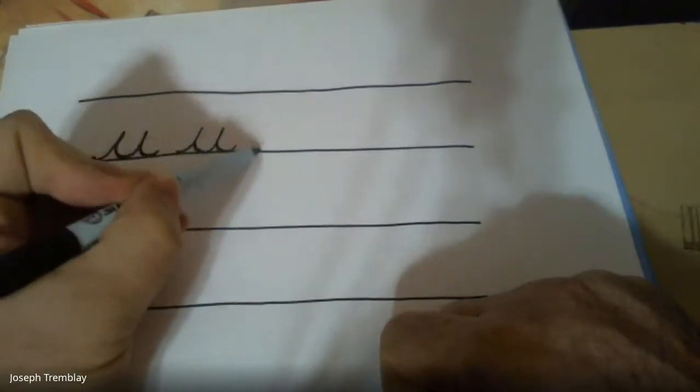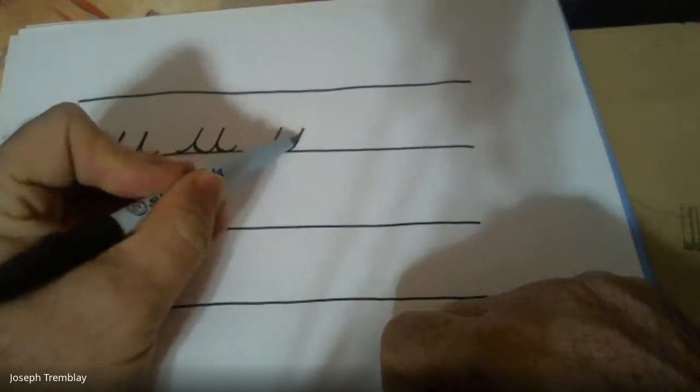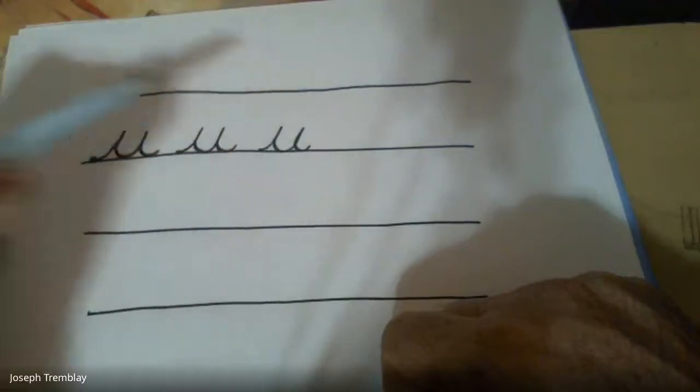So again we start on the ground, we go upstairs, downstairs, upstairs, downstairs, and out. There's the letter U. Some of the other letters we've been practicing.